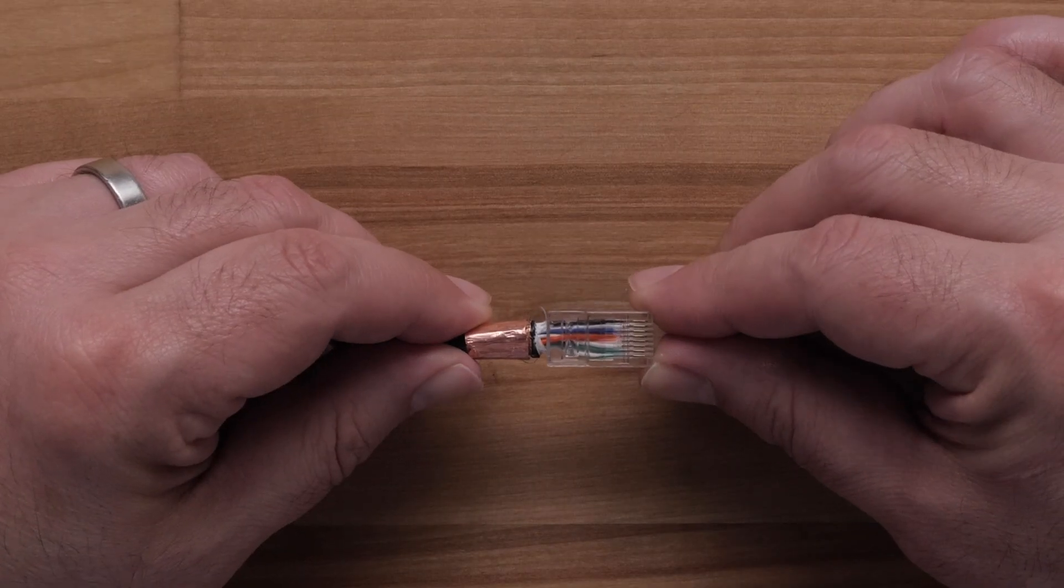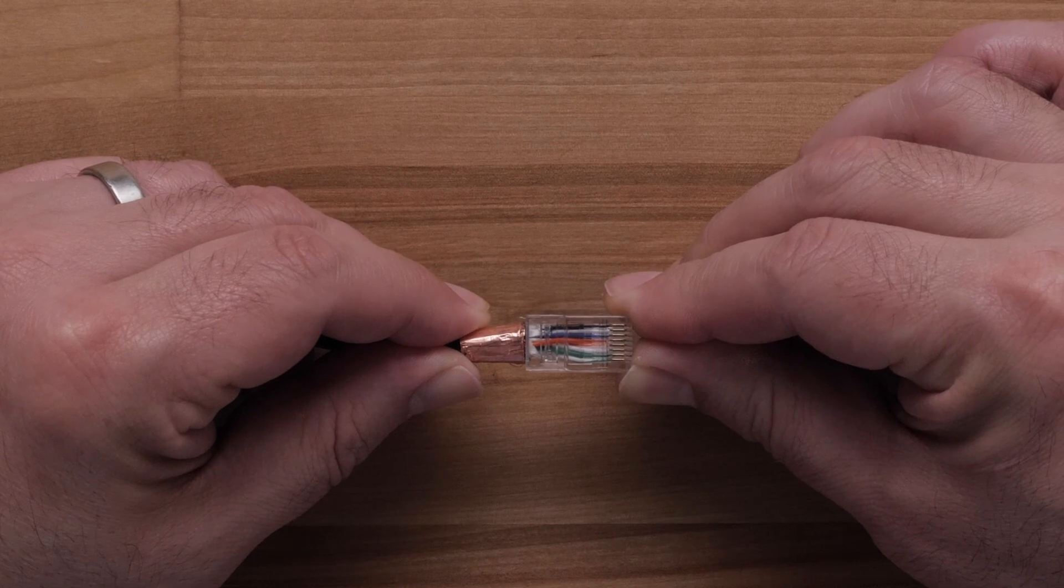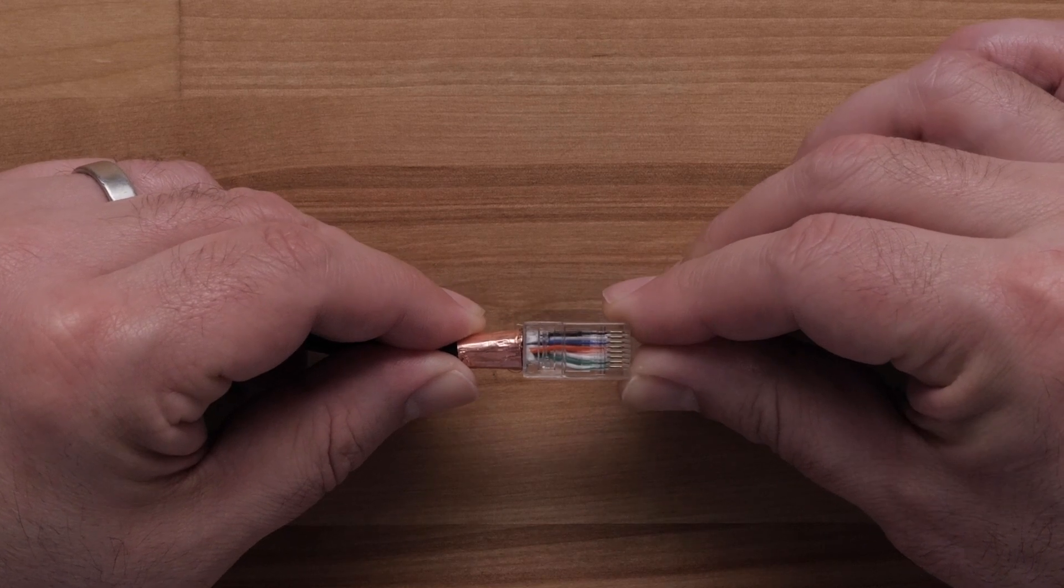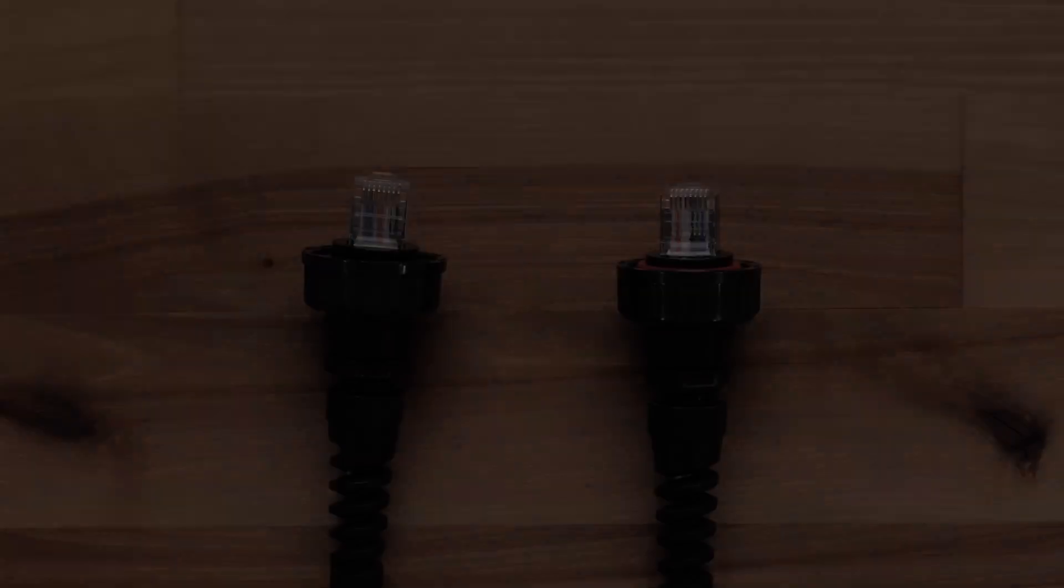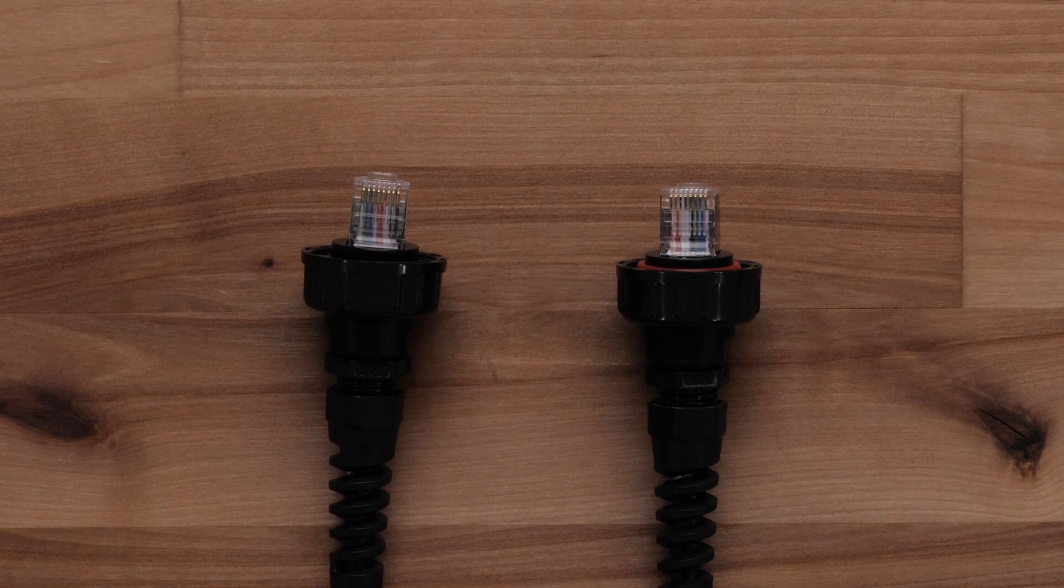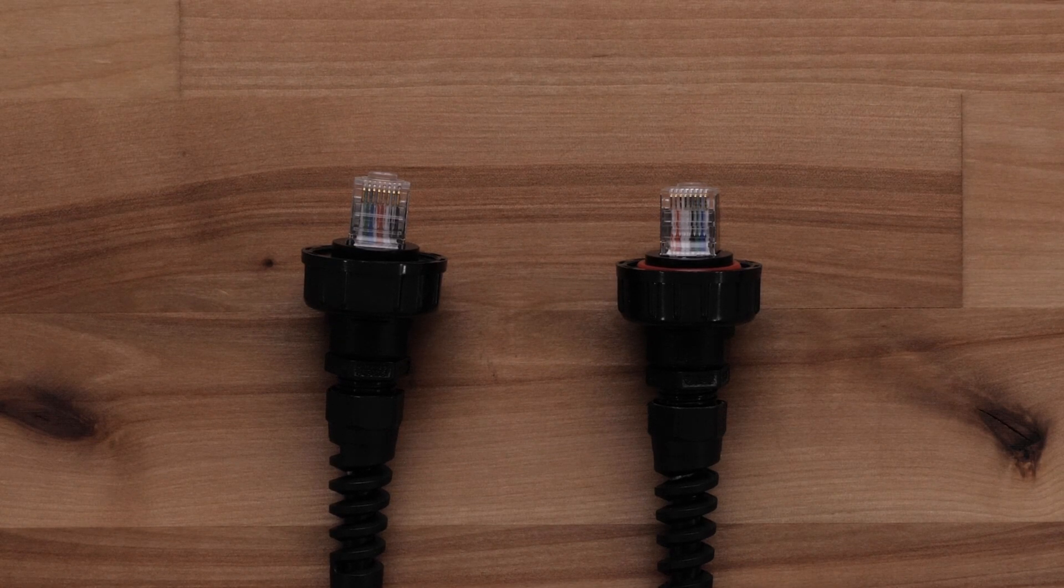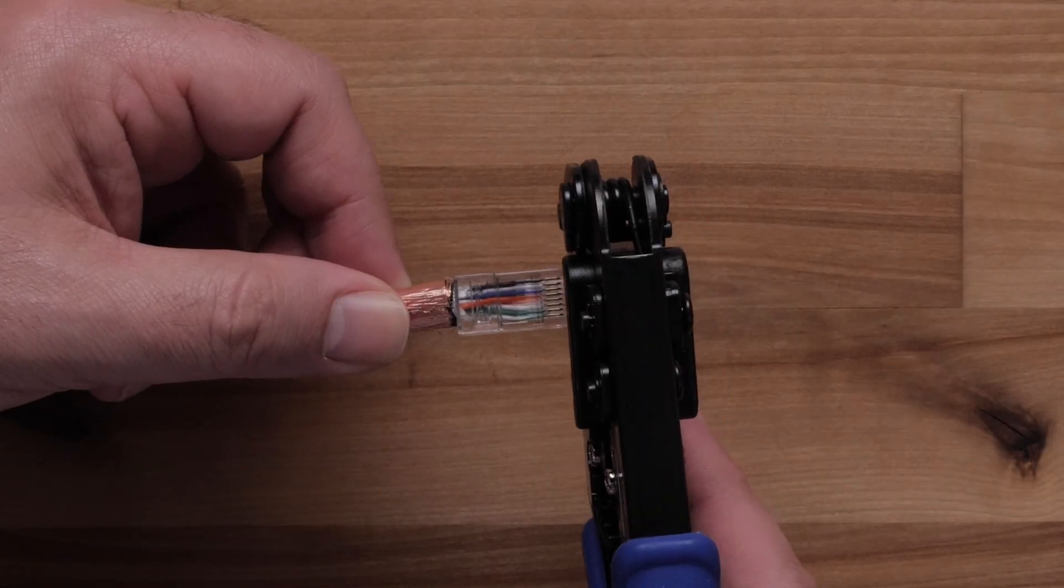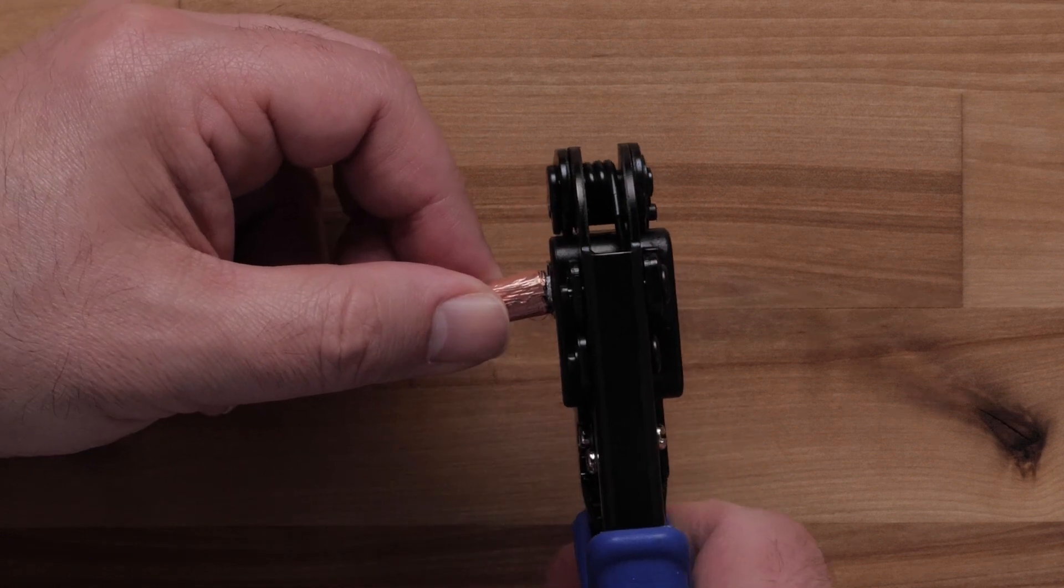Next, insert the wires into the RJ45 connector until the ends of the wires touch the bottom of the connector. Verify the wires are in the correct order according to the table. Crimp the connector onto the wires with the RJ45 crimping tool.